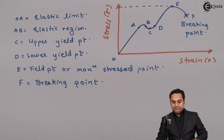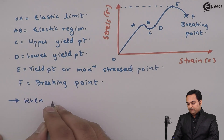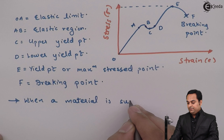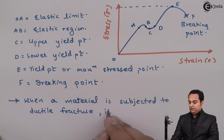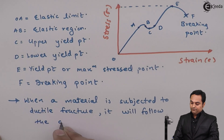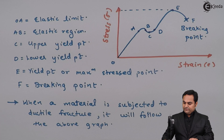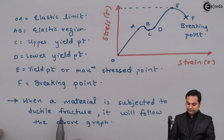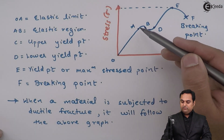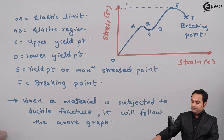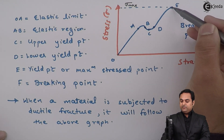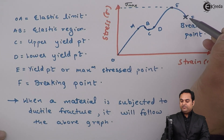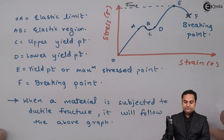Point F is called the breaking point where the material will break into two parts. When a material is subjected to ductile fracture, it will follow this graph. At point E the stress value is maximum, and even if the stress decreases after that, there is a point at which the material will finally break — called the breaking point. This was for ductile material.